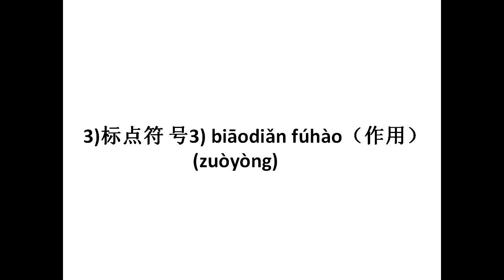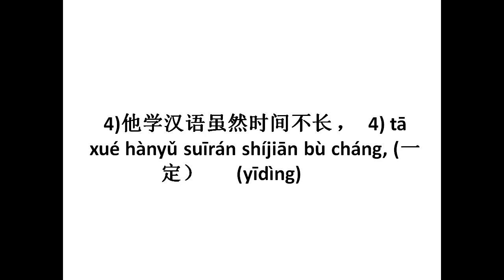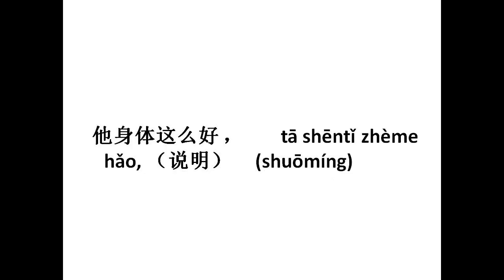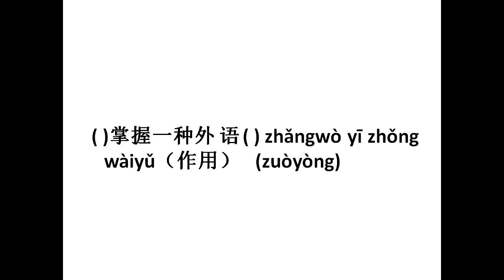Moving on to the fourth one. Pa Shui Hanyu, Sui Ran Shichyan, Poo Chang — although he has not learned Chinese for a very long period. We have to fill it with 'eating certainly.' So we can say: although he has not learned Chinese for very long, certainly his Chinese level is good. Tha Shanti, Chama Hao — his health is so good. We have to fill in using the word Shuo Ming, which means description. Chang wo Yi Chong Why you — Chang wo is to master, Why you is foreign language. We have to fill in the blank using Suo Yong. So we can say: mastery of a foreign language will have use, or it would be useful.